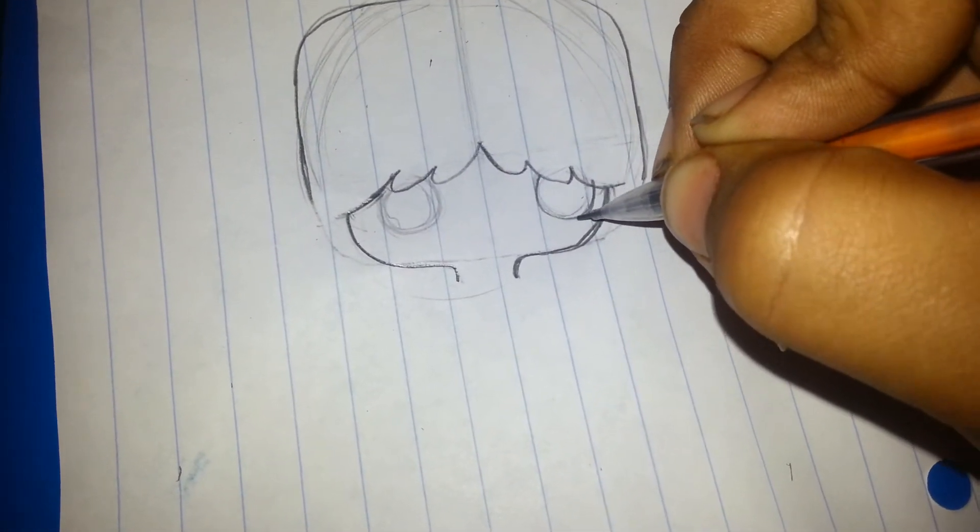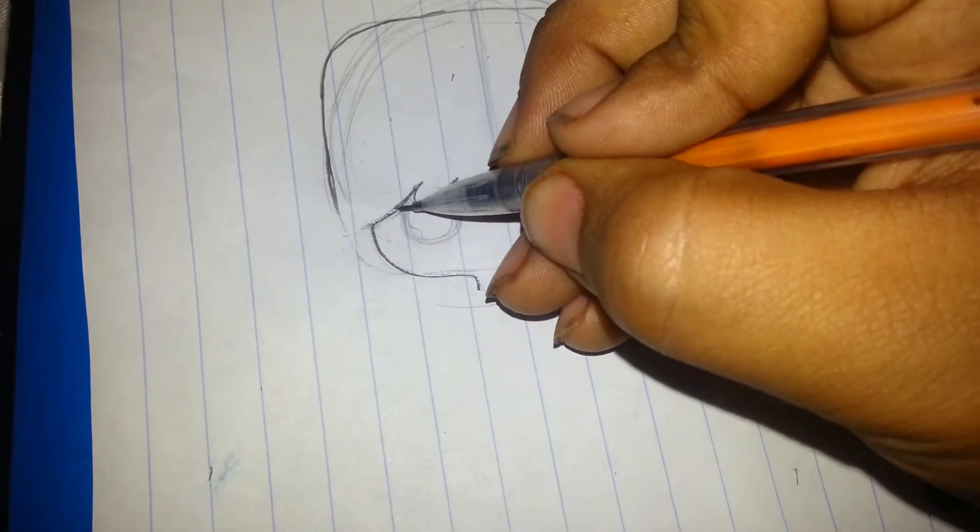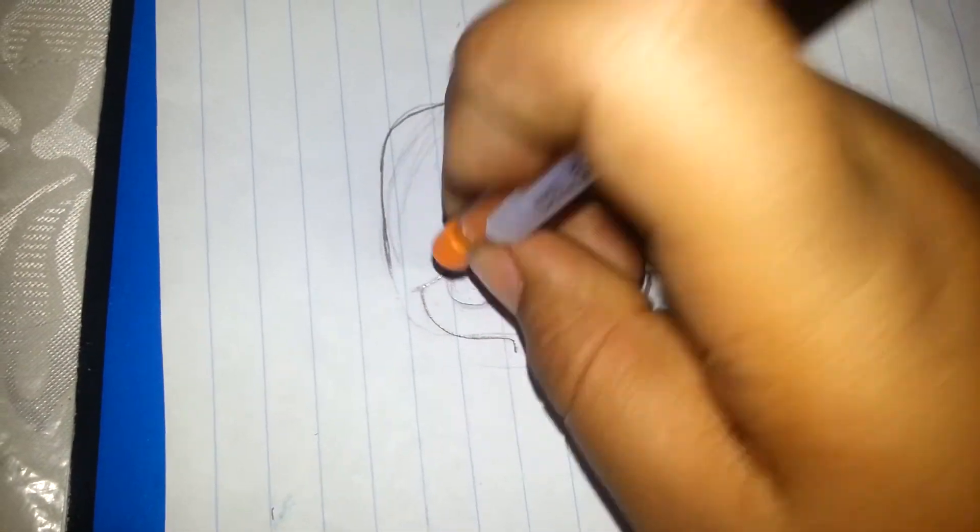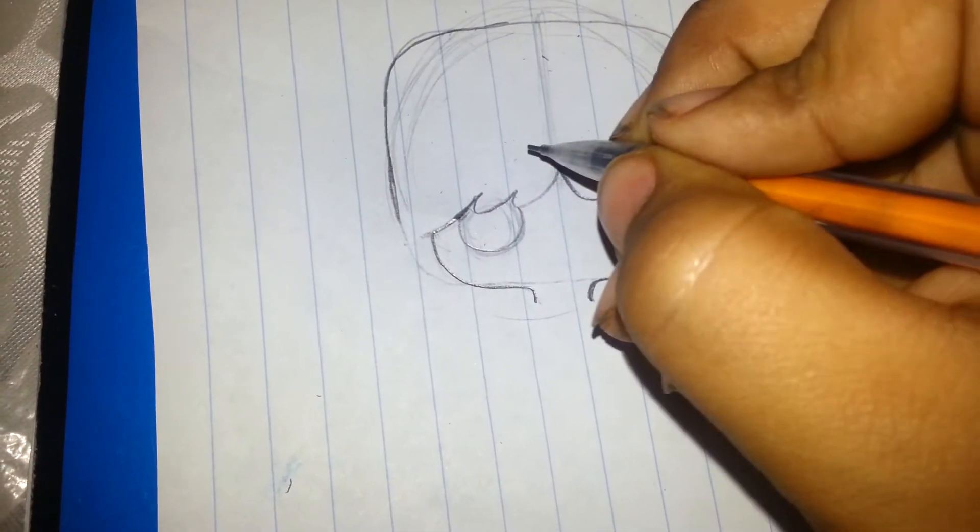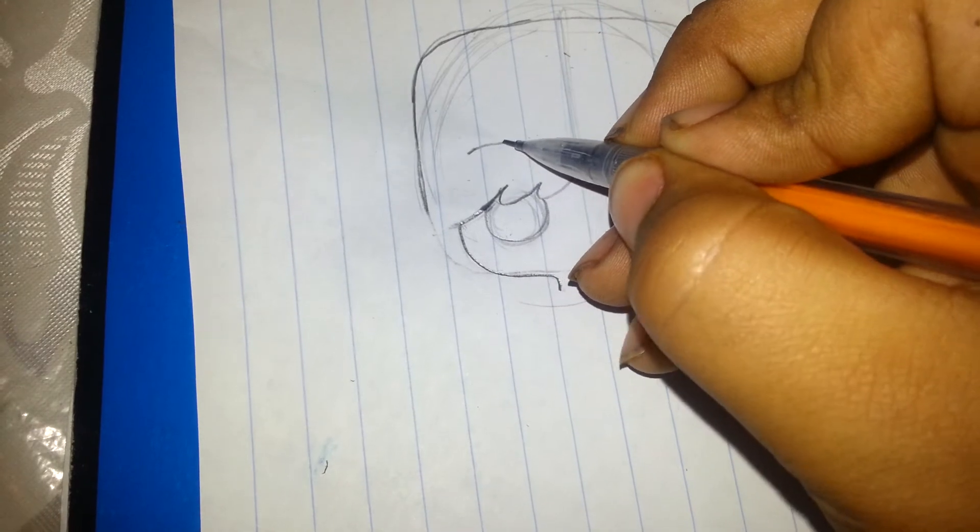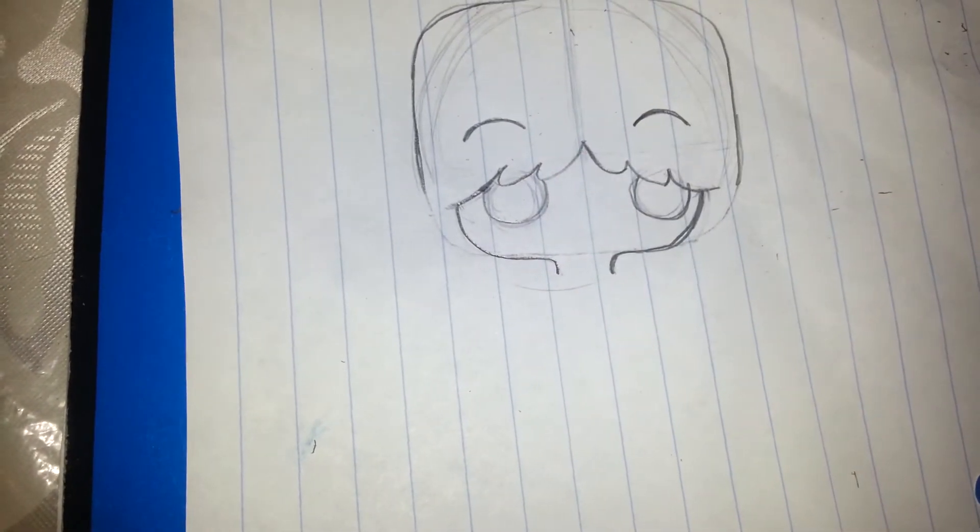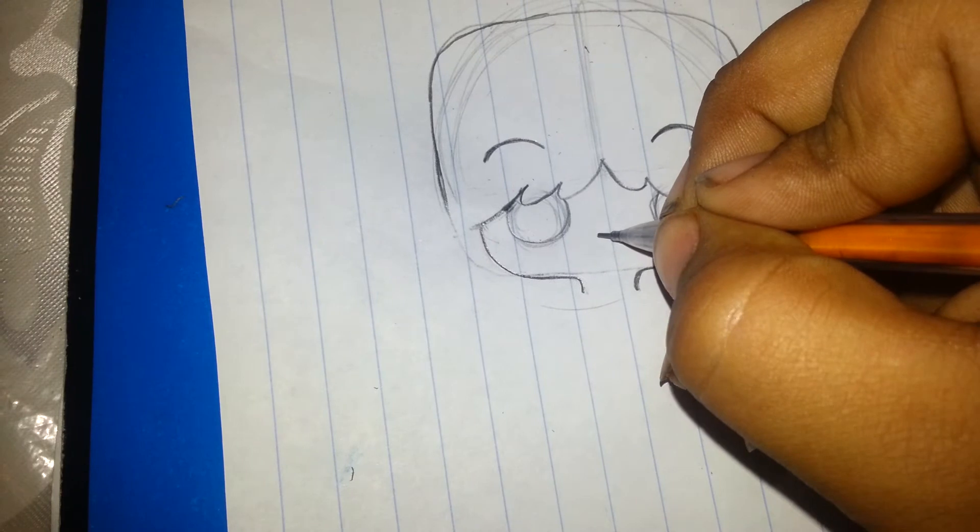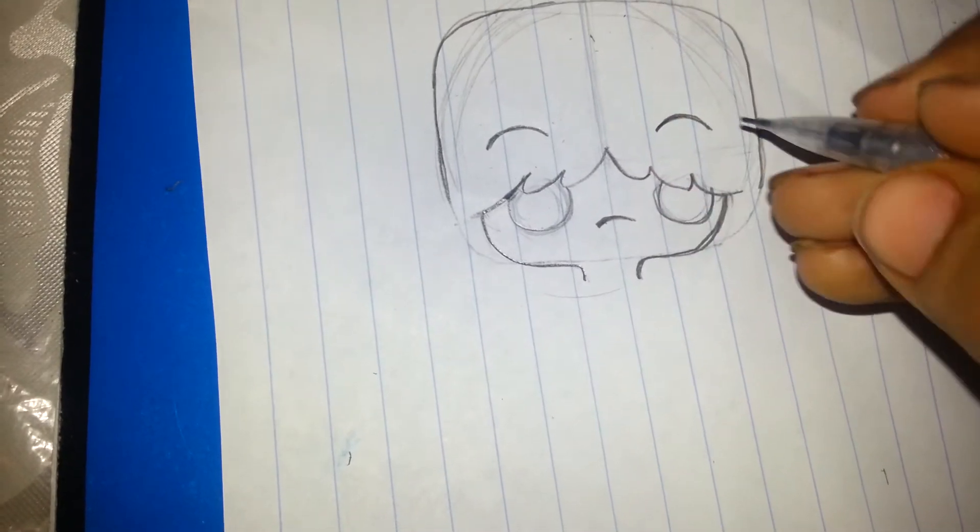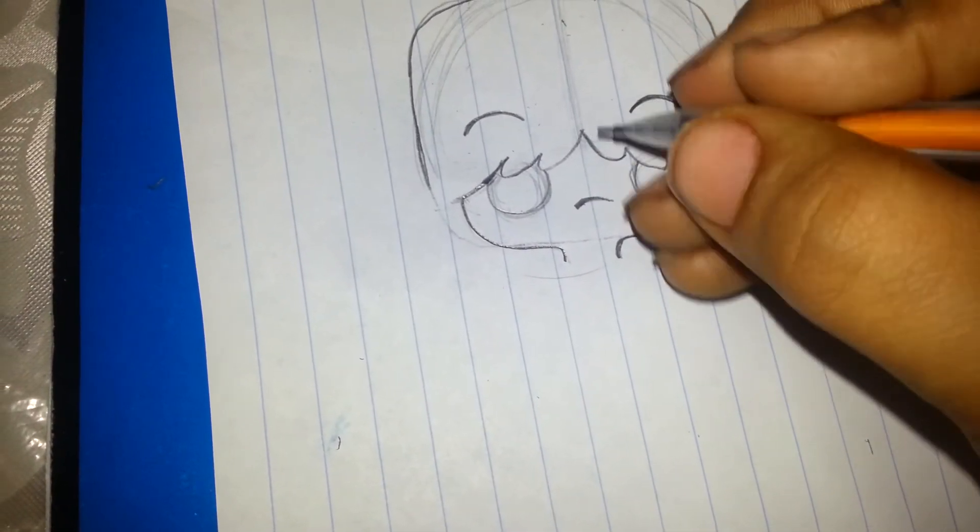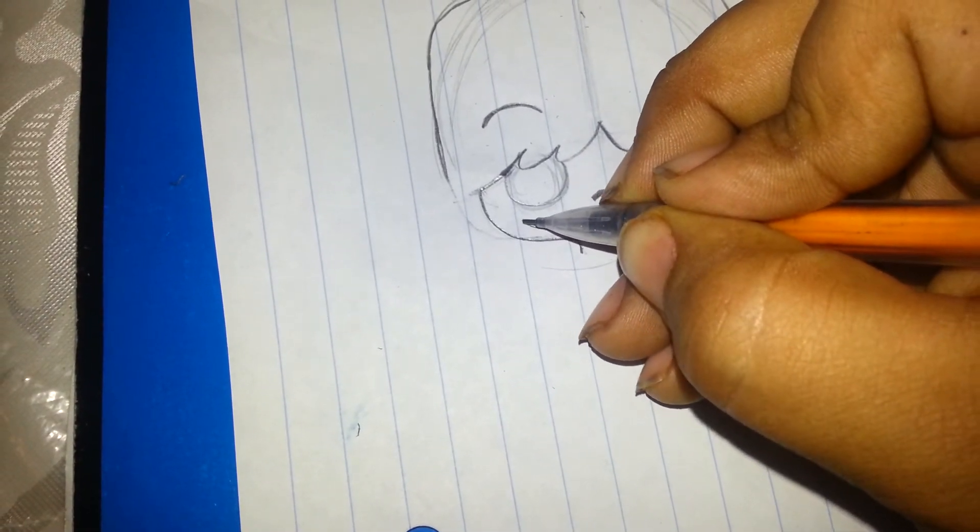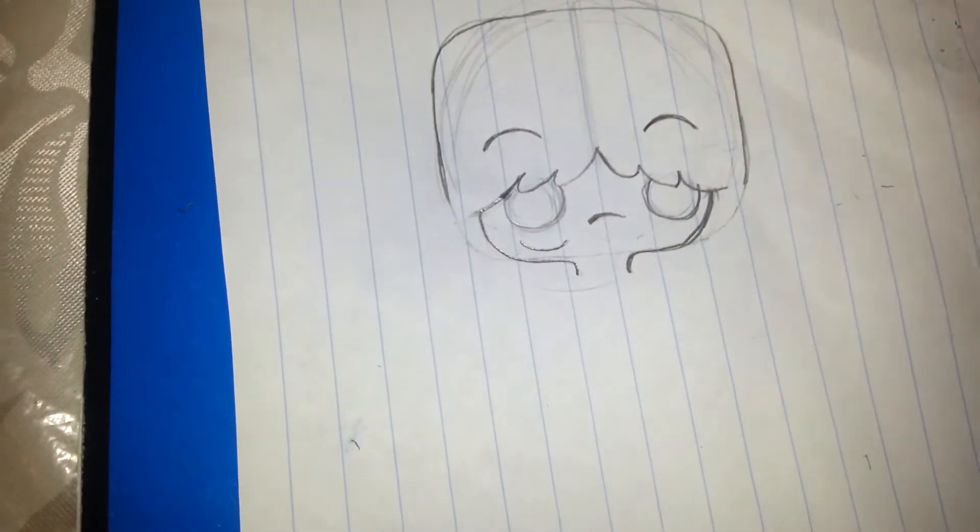His eyes go under his hair bang. Then after that, put his eyebrows. And then put his nose. It's like an upside down letter U. And then for his mouth, put a smile under his eye.